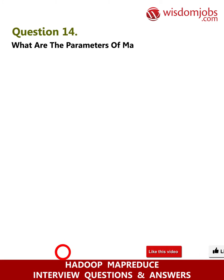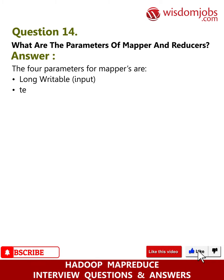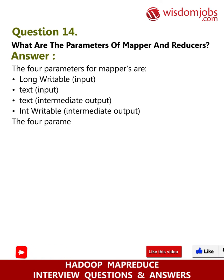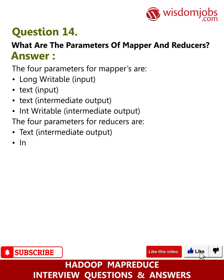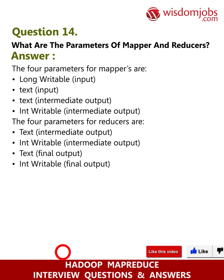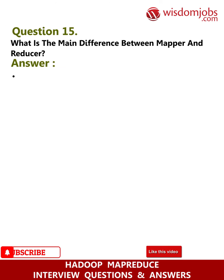Question 14: What are the parameters of mappers and reducers? Answer: The four parameters for mappers are: LongWritable input, Text input, Text intermediate output, and IntWritable intermediate output. The four parameters for reducers are: Text intermediate output, IntWritable intermediate output, Text final output, and IntWritable final output.